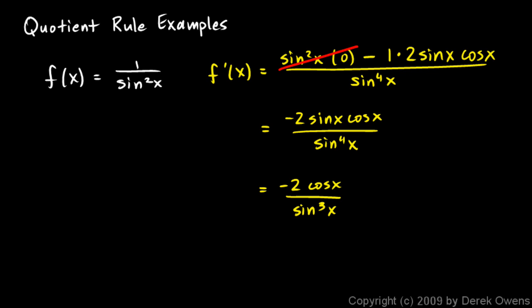So that would be an answer. But note that this is also equivalent to negative 2 over sine squared x times tangent of x. Because this cosine over one of these sines would be a cotangent, and the cotangent is equivalent to a tangent in the denominator. So it could be written like that, or it could be written like this.